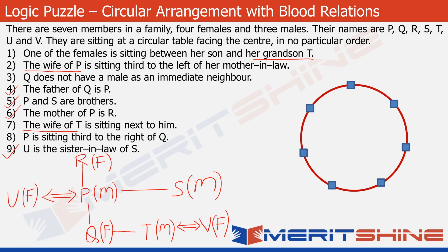This is how the circular structure looks — it resembles a circular table with eight chairs. Let's start with statement eight, which says P is sitting third to the right of Q. Let's place Q somewhere, then count: one, two, three — that's the position of P. Since Q is female, let's put F there, and since P is male, M there.